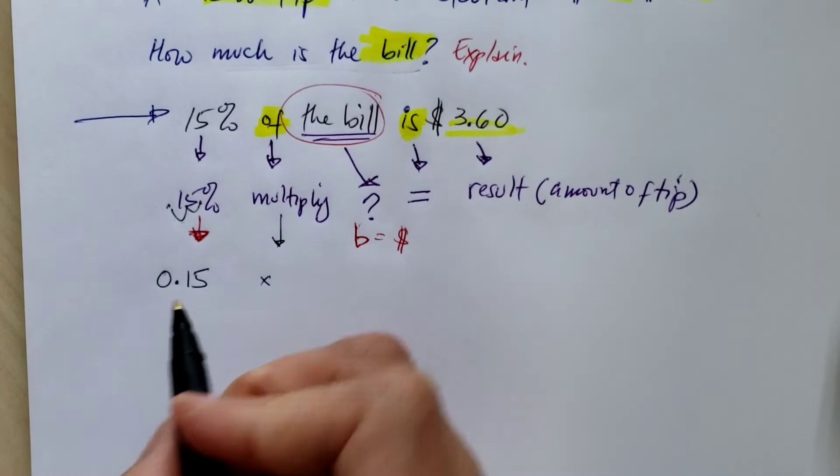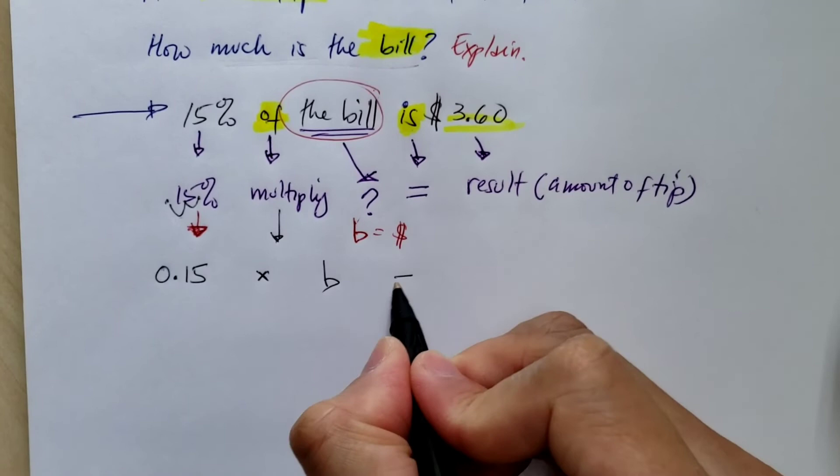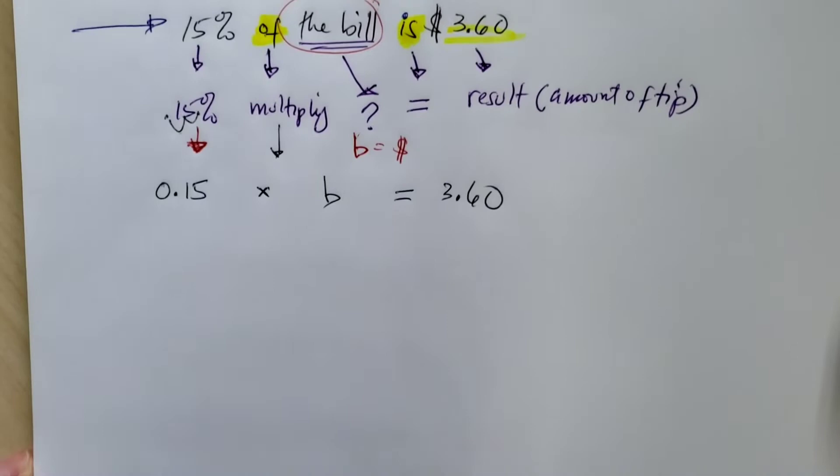So multiply means to multiply. And we do not know the bill. That means B is equal to the result. The tip is $3.60.